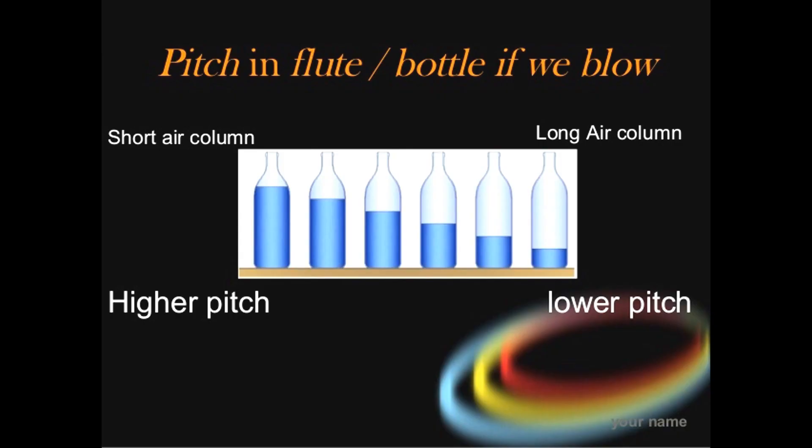Here's another example — pitch in a flute. If you blow on each bottle, the bottles have different levels of water. A short air column means the more water you have, the higher the pitch, and the less water, the lower the pitch. Remember, this is for when you blow on each of the different bottles — like in a flute form. So when blowing, less water gives a lower pitch and more water gives a higher pitch.